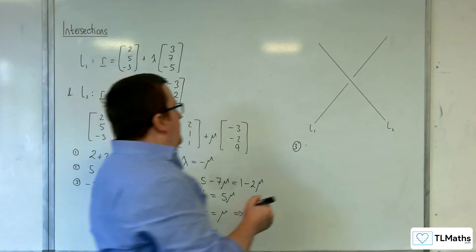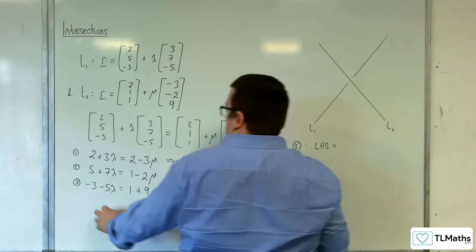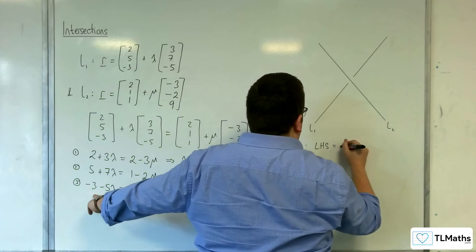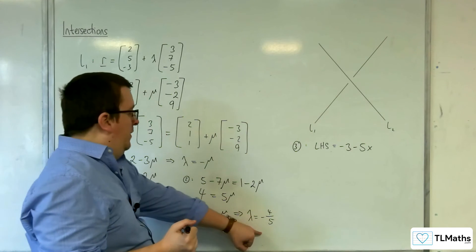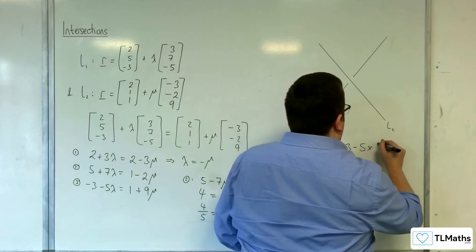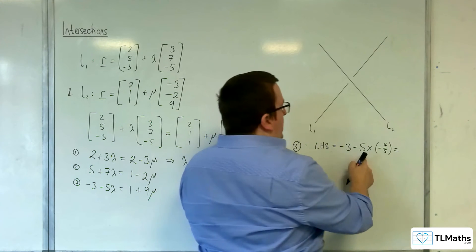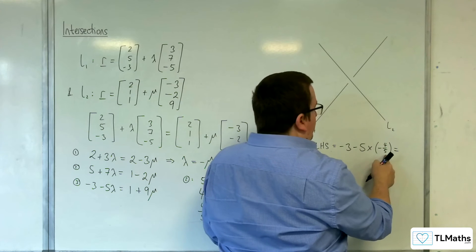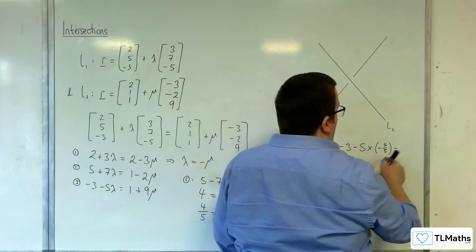So for equation 3, we've got a left-hand side, which is minus 3 take away 5 lambda. So minus 3 take away 5 times minus 4 fifths. So minus 5 times minus 4 fifths is going to be plus 4. So minus 3 plus 4 is 1.